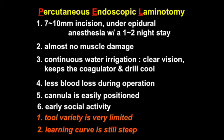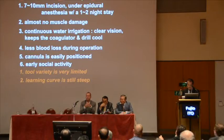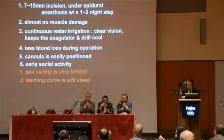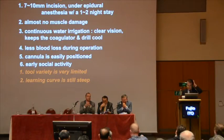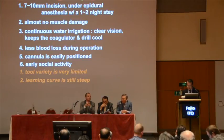PEL conclusions: First, PEL requires only a 7-8 mm incision and a short hospital stay. Second, the small incision causes almost no muscle damage. Third, continuous water irrigation provides clear vision and keeps the coagulator and drill from overheating. Fourth, PEL has less blood loss during operation. Fifth, the cannula is narrow and easily positioned. Sixth, the patient can resume social activity soon. However, there are a couple of disadvantages: there are few suitable tools for PEL currently, and the learning curve is still quite steep.